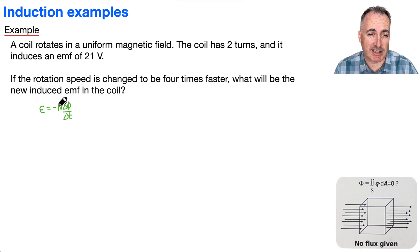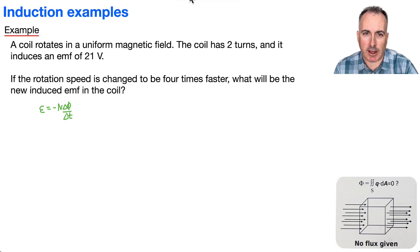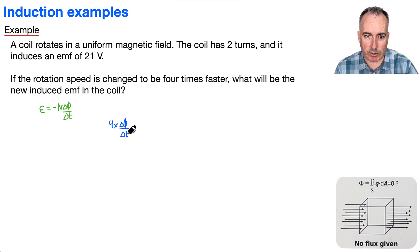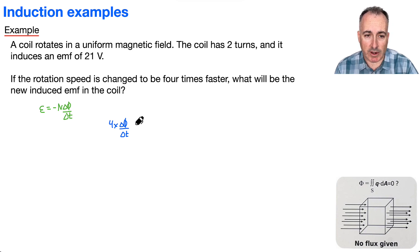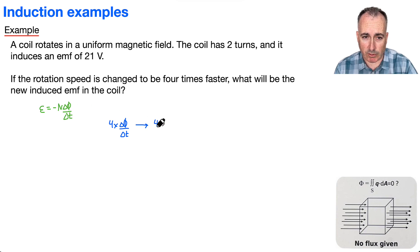We do know about the speed, so the speed is going to tell us something. If we know it's four times faster, that means it's going to be four times the speed of delta phi over delta T. Four times faster means you have four times the rate of magnetic flux linkage. Since the induced EMF is proportional to this, it'll just be four times the original EMF.